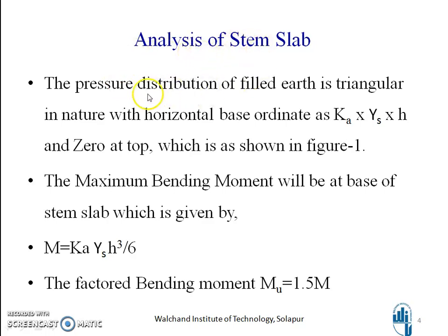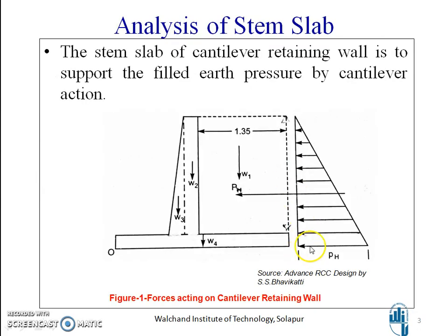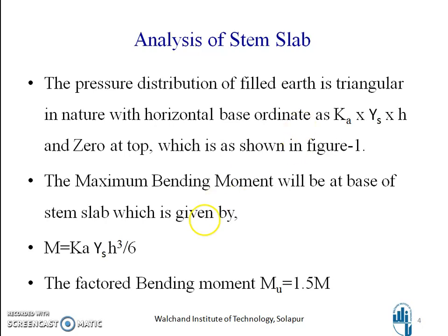Analysis of STEM Slab: The pressure distribution of filled earth is triangular in nature with horizontal base ordinate as k·γs·h and 0 at top, as shown in the figure. The maximum bending moment will be at the base of STEM Slab, which is given by k·γs·h³ divided by 6.